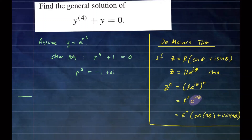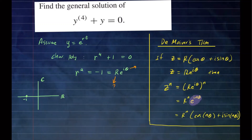If you write negative 1 as a complex number, you can write it as negative 1 plus 0i. If I draw this on the real and complex plane — here is our real axis, here is our complex axis — negative 1 plus 0i means negative 1 is on the real axis with nothing along the complex axis. We want to write this number in polar form, r e to the iθ. We need to figure out what r and θ are.